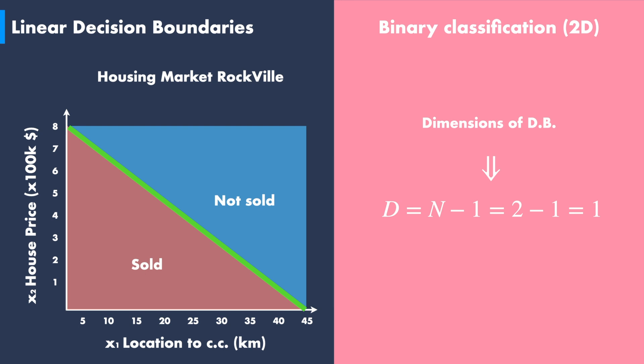As a reminder, we can compute the dimensions of the decision boundary such as d equals n minus 1, with n being the number of input features such as the location of the house, its price, and so on. In the case of our housing market example...